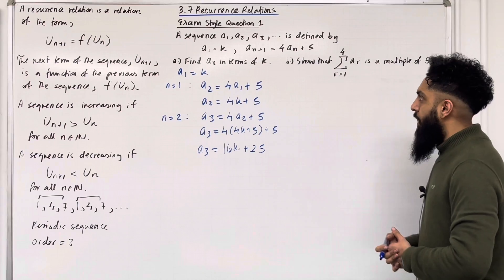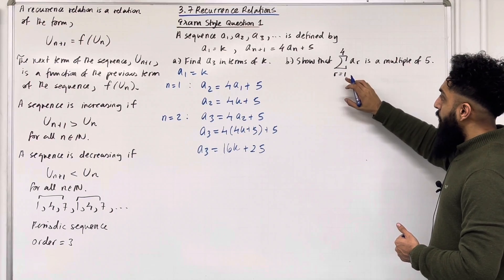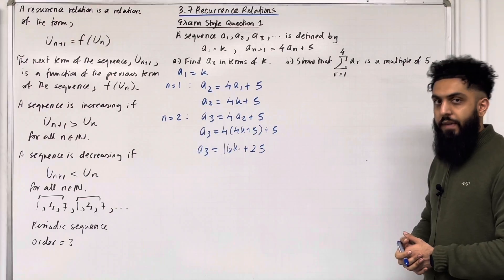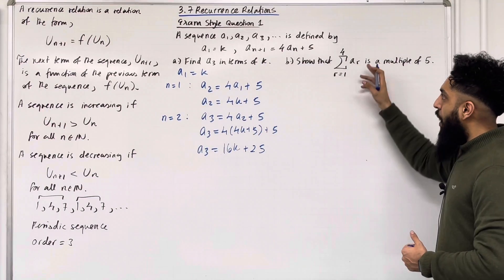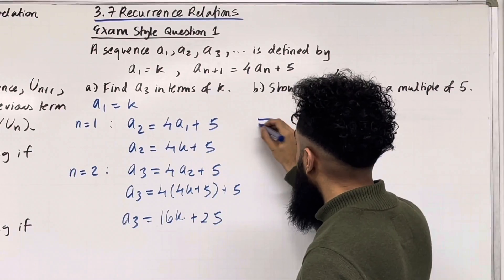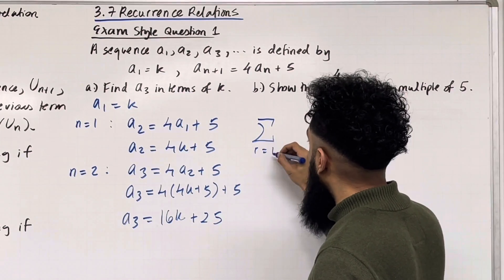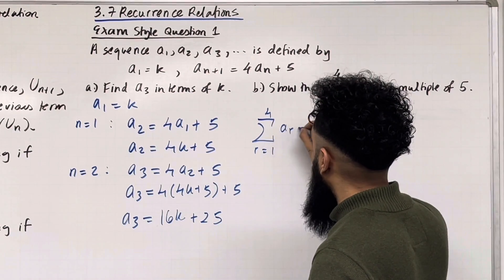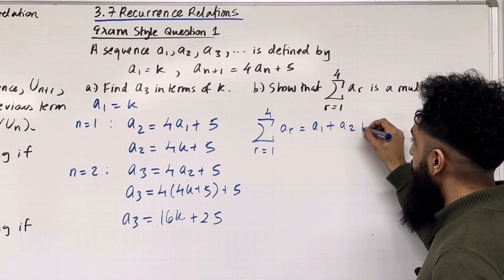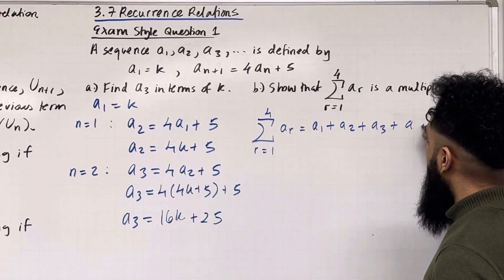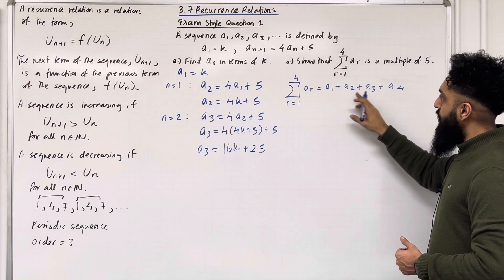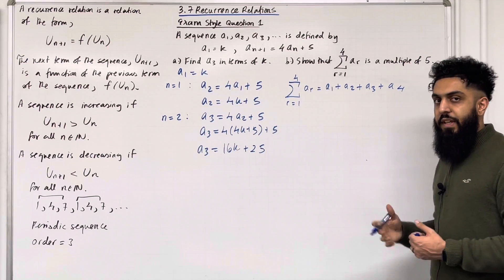Let's move on to part B: show that the sum from r = 1 to 4 of a_r is a multiple of 5. We can open up this sum: the sum equals a1 + a2 + a3 + a4. We already have a1, a2, and a3, but we don't have a4.